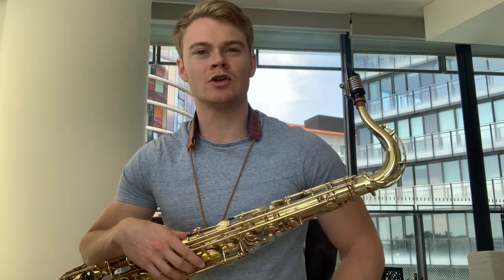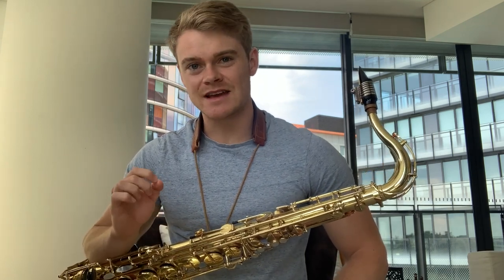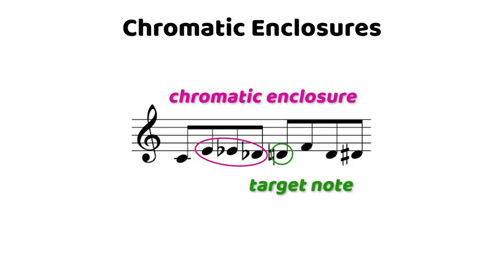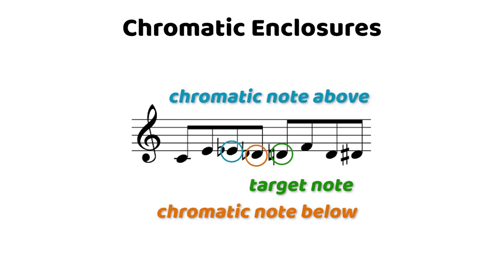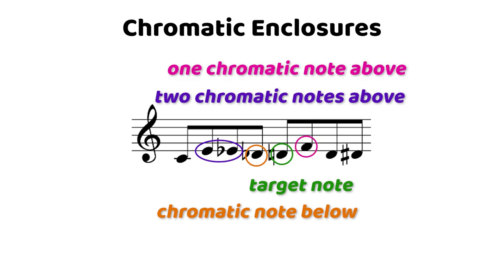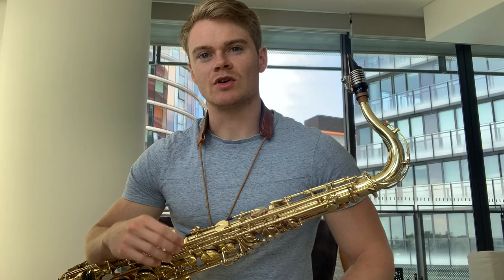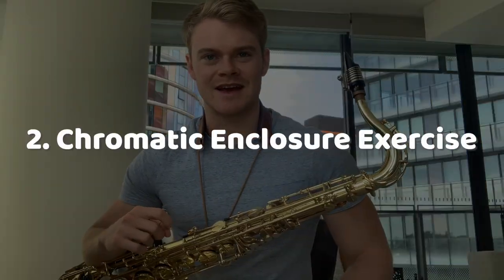On to chromatic enclosures now. They are exactly how the name sounds — we are enclosing a target note. In other words, we are wrapping a target note with different chromatic notes. This means that we will usually have a chromatic note above and a chromatic note below. This is sometimes paired with two chromatic notes above and one chromatic note below, or vice versa — one chromatic note above and two chromatic notes below. That is a chromatic enclosure, both two notes and three notes. So let's check this out in an exercise.